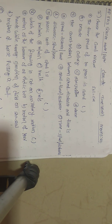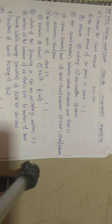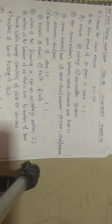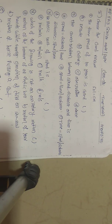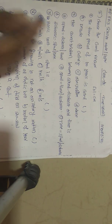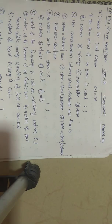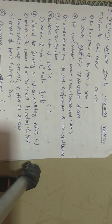First question: The time period of 100 years is called — Option A: decade, Option B: century, Option C: silver jubilee, Option D: none. The answer is Option B, century, because century means 100 years.